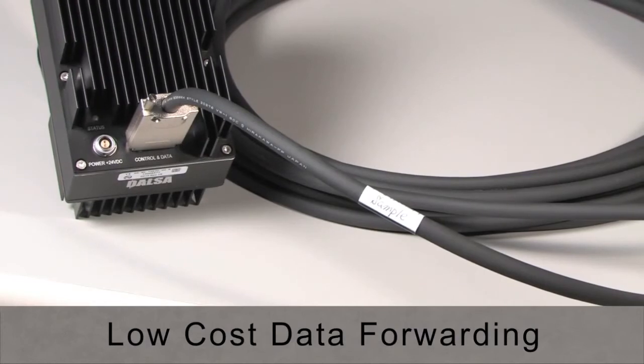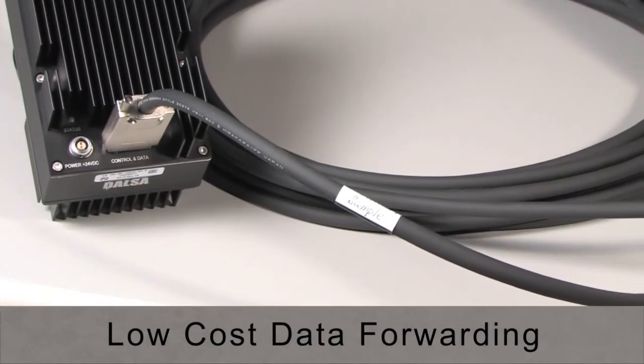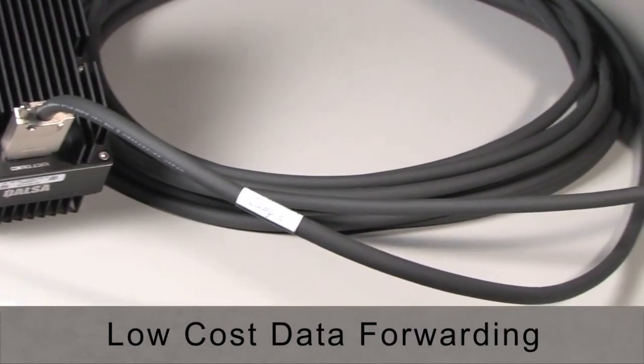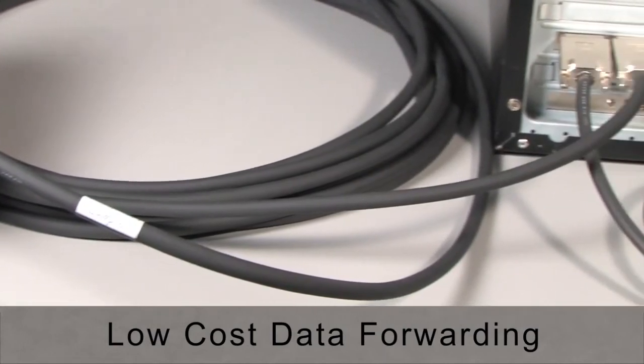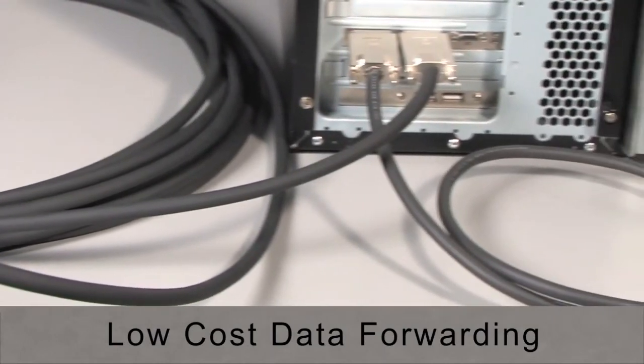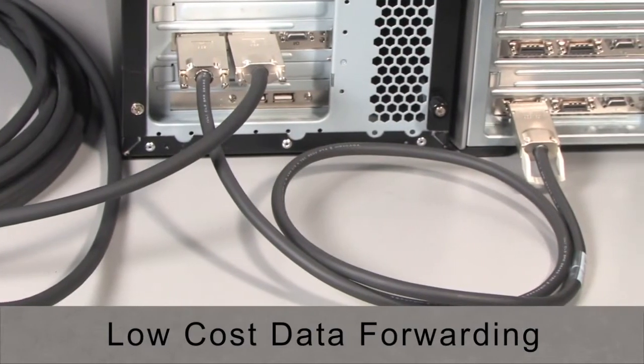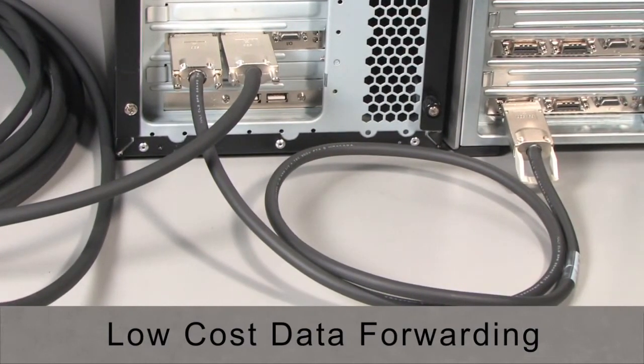We understand that two gigabytes per second is not easy to process, so data forwarding has been designed into the CameraLink HS standard, making use of the unused transmitter portions of the transceiver. This is a low-cost addition.